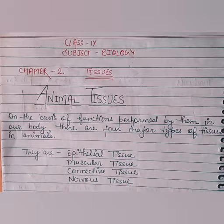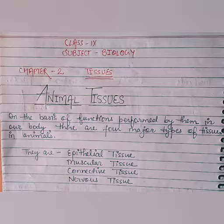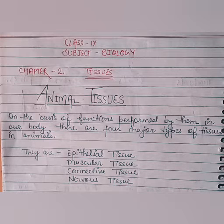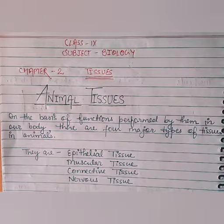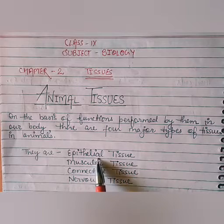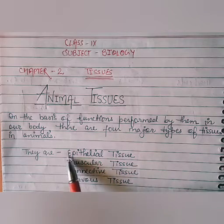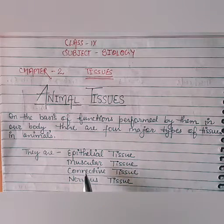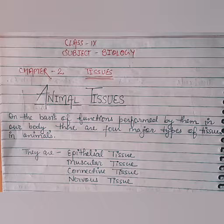In the case of animal tissues, the tissues are different from plant tissues because of the difference in their needs of life. There are totally different kinds of animal tissues present in animal bodies. The animal tissues are of four types on the basis of their function: epithelial tissue, muscular tissue, connective tissue, and nervous tissue.